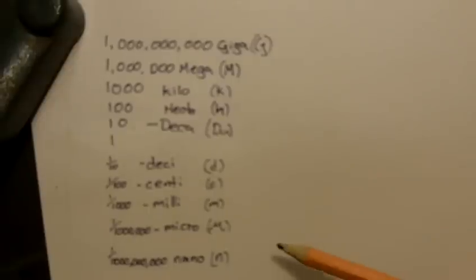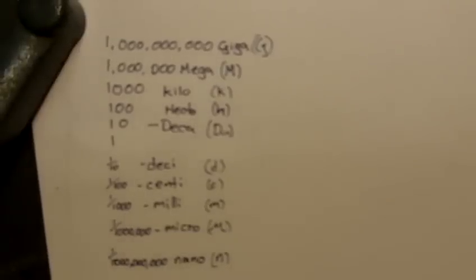So that saves us having to write lots and lots of zeros after our measurements. And if we have nine billion meters, we could just write nine gigameters.